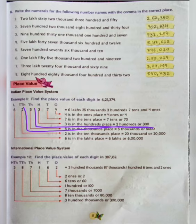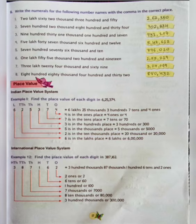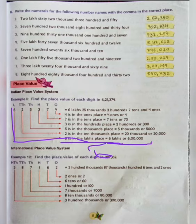Then 5 is in the 1000's place, equal to 5 thousands, or 5,000. Then the next is the 10,000's place. So 2 is in the 10,000's place, equal to 20,000. Then the last one is the lakh's place. So 6 is in the lakh's place, equal to 6 lakhs, or 6,00,000. You can see here.